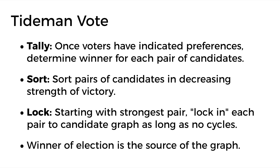We start by tallying up the votes. Once all voters have indicated their preferences, we look at each pair of candidates and determine who would win for just that pair. After we have all pairs, we sort them in decreasing strength of victory — strongest margin first down to smallest. Then we lock those pairs in one at a time: starting with the strongest pair, we add each edge to the graph as long as it doesn't create a cycle. If it would create a cycle, we skip it and move on. After generating the locked graph, the winner is whoever is the source — the candidate with no arrows pointing at them.